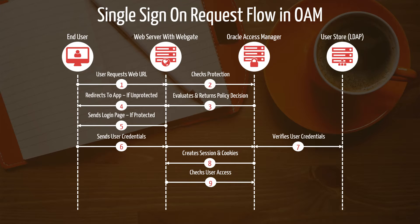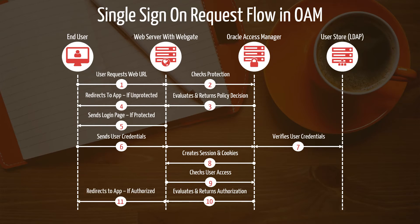Once the credentials are validated, it's time for authorization, where OAM determines whether the authenticated user is authorized to view the requested resource or not. This is determined using the authorization policy set by the administrator. The decision is sent back to WebGate. If the user is authorized, WebGate will serve the web page. If the user is not authorized, it will redirect the request to an unauthorized page, which can be customized. This is how the request flows between the four layers when you access any URL protected using Oracle Access Manager.